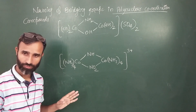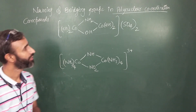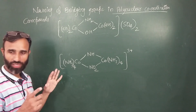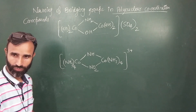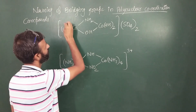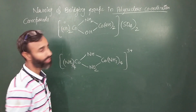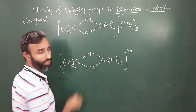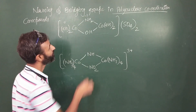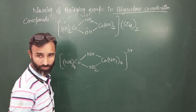Now, how do you write the name? First, the oxidation number. Same metal — it's zero. NH2 is minus 1, OH is minus 1.